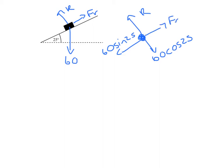So I can see from my diagram now that R is 60 cos 25, which is 54.378, so that is 54.4 newtons.